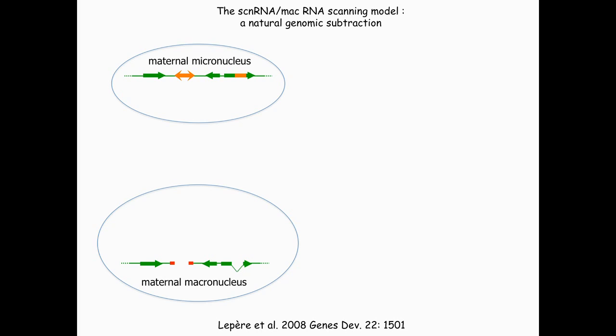The scan RNAs — their name derives from the fact that they are supposed to scan the maternal genome that was rearranged in the previous generation. The mic is here, genes are in green, there is a transposon in orange, and an IES that has to be precisely excised. The transposon will be eliminated and fragment the mic chromosome. The scan RNAs actually mediate the comparison of these two genomes prior to development of the new macronucleus, so as to compute what has to be done in the next generation.